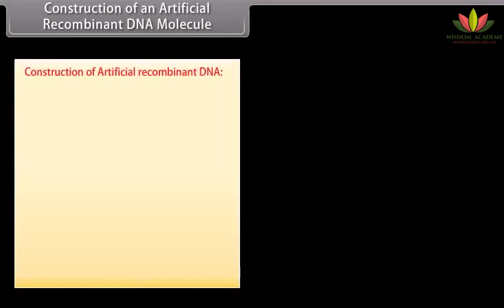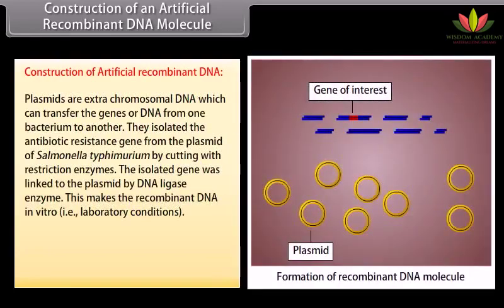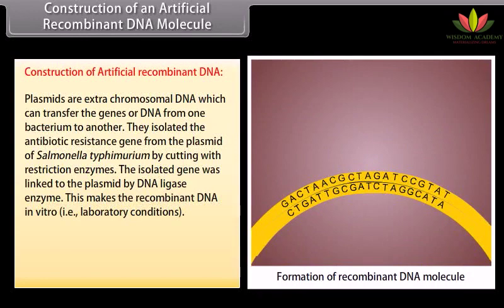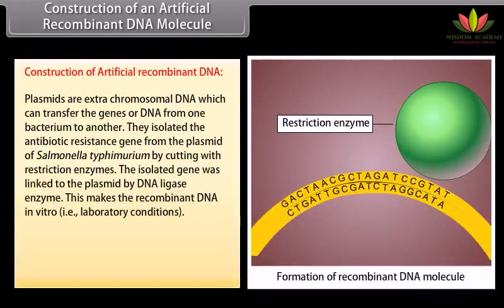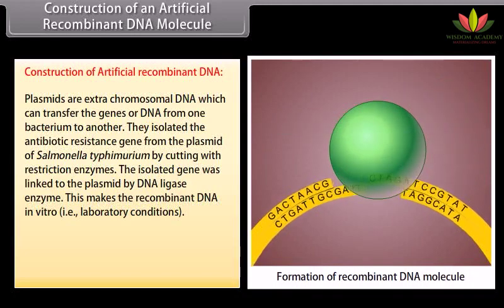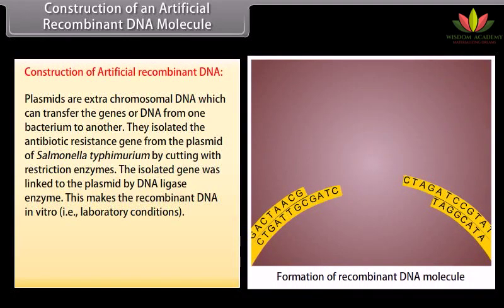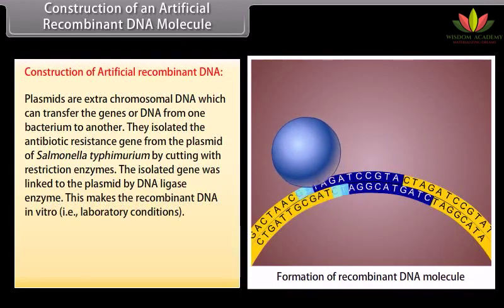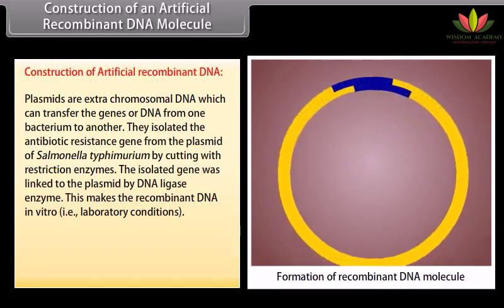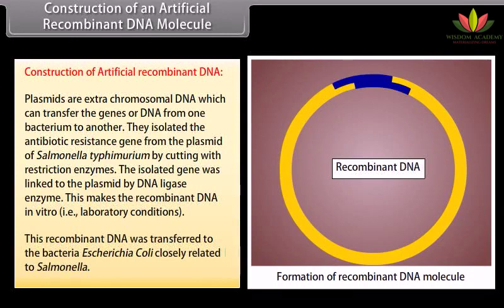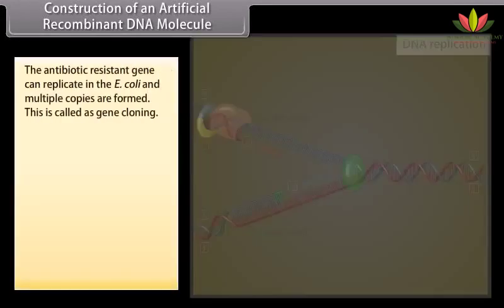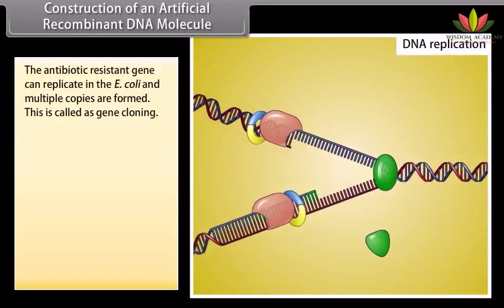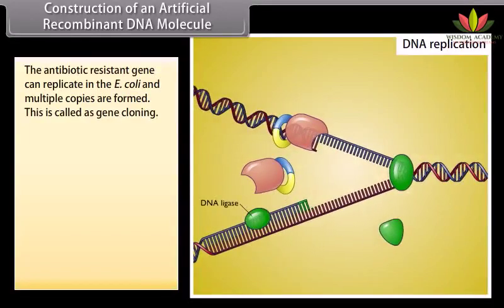Construction of artificial recombinant DNA. Plasmids are extra-chromosomal DNA which can transfer the genes or DNA from one bacterium to another. They isolate the antibiotic resistance gene from the plasmid of Salmonella typhimurium by cutting with restriction enzymes. The isolated gene was linked to the plasmid by DNA ligase enzyme. This makes the recombinant DNA in vitro — that is, under laboratory conditions. This recombinant DNA was transferred to the bacteria Escherichia coli, closely related to Salmonella. The antibiotic resistance gene can replicate in E. coli and multiple copies are formed. This is called gene cloning.